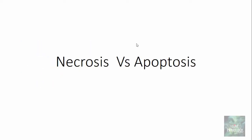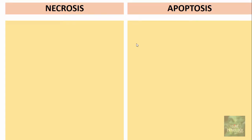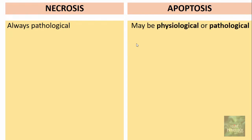Coming to the differences between necrosis and apoptosis: necrosis is always pathological, whereas apoptosis may be physiological or pathological. In necrosis, adjacent groups of cells are affected, whereas in apoptosis it is always the single cell which is affected.